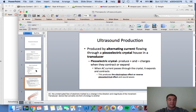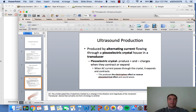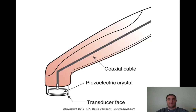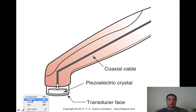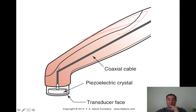AC is the uninterrupted flow of electrons marked by a change in direction and magnitude of movement. The transducer is the device that converts one form of energy - electrical energy from the wall - to sound energy. The coaxial cable goes down the wand and connects to the generator of the machine. Within the wand, we have the piezoelectrical crystal that changes and deforms producing the sound wave. The transducer face is what gets rubbed on the patient's skin with a coupling medium.